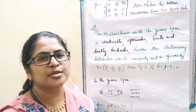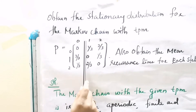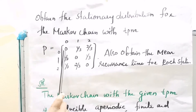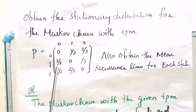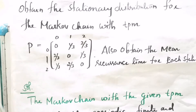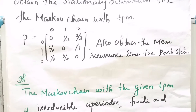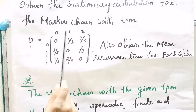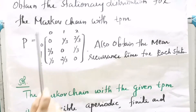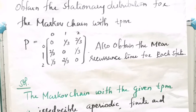Now let's do a problem. Obtain the stationary distribution for the Markov chain with transition probability matrix P = (0, 1/3, 2/3; 2/3, 0, 1/3; 1/3, 2/3, 0). Also obtain the mean recurrence time for each state. We have three states: 0, 1, and 2. First, we find the stationary distribution, and then we obtain the mean recurrence time μj.